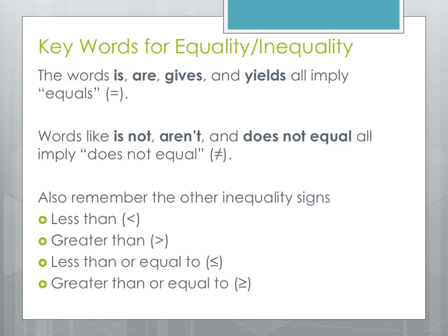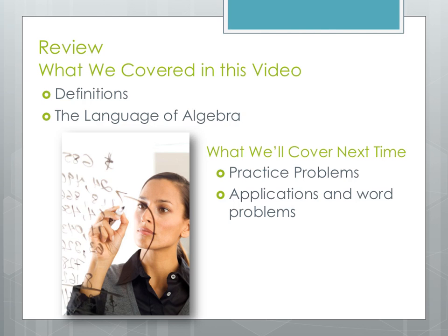When we write algebraic equations, we need to look for keywords that tell us when to use the equal sign or an inequality sign. Words like 'is,' 'are,' 'gives,' or 'yields' all imply an equal sign in our number sentences. Words like 'is not,' 'aren't,' or 'does not equal' imply the not-equal sign. Also remember to look out for other inequality signs like less than, greater than, less than or equal to, or greater than or equal to.